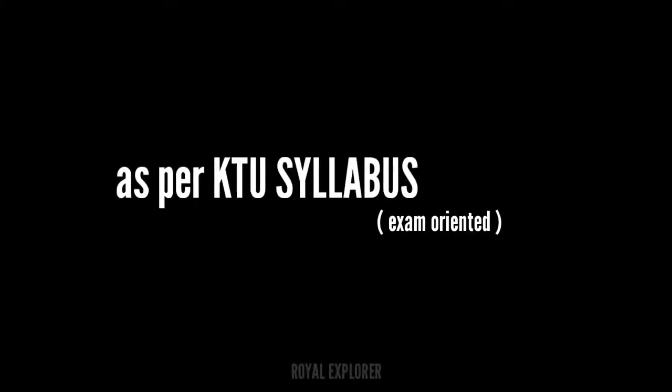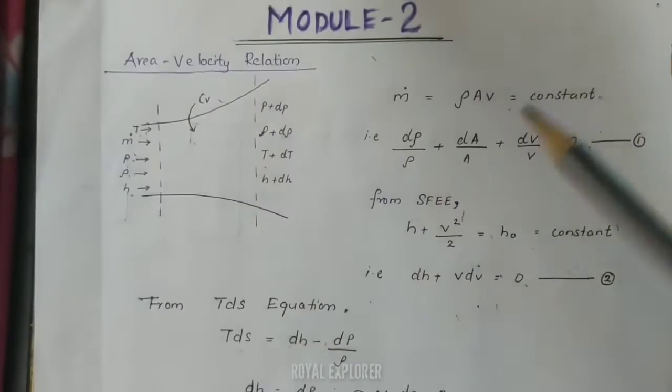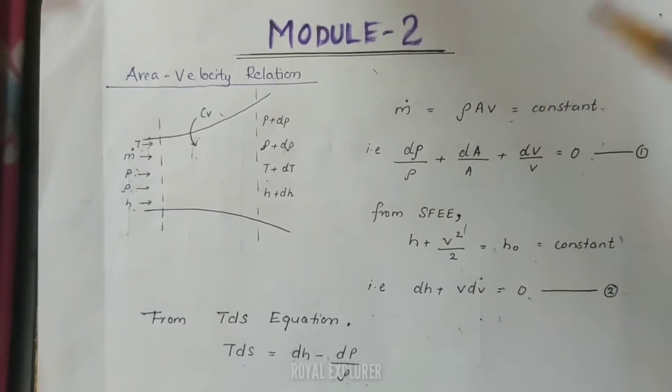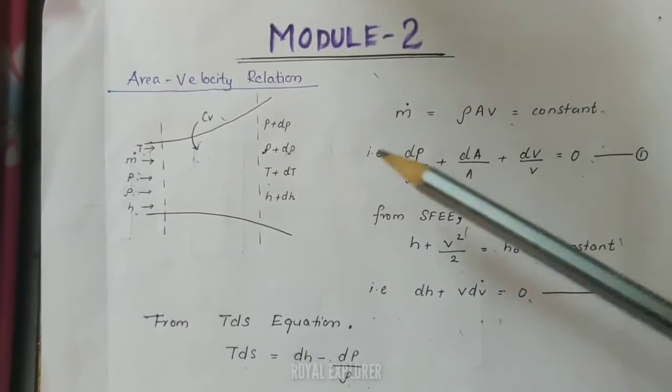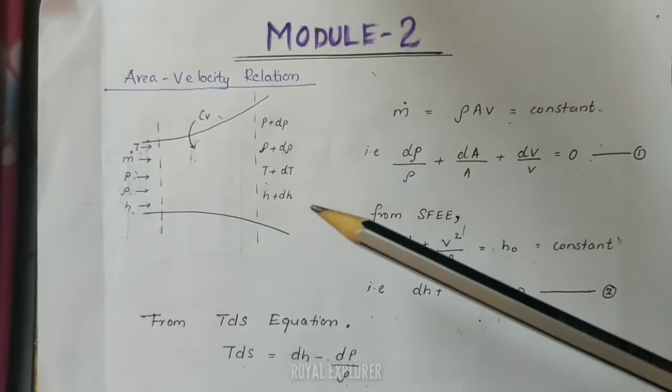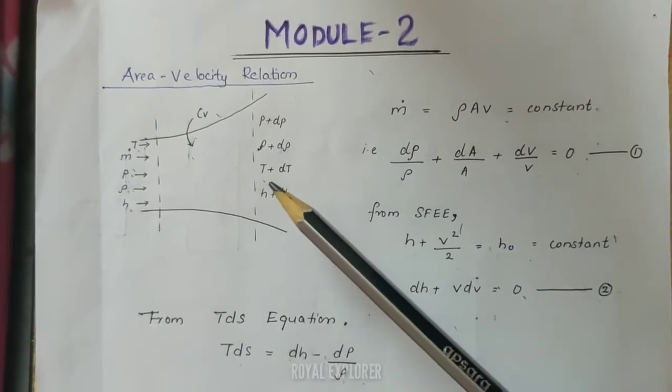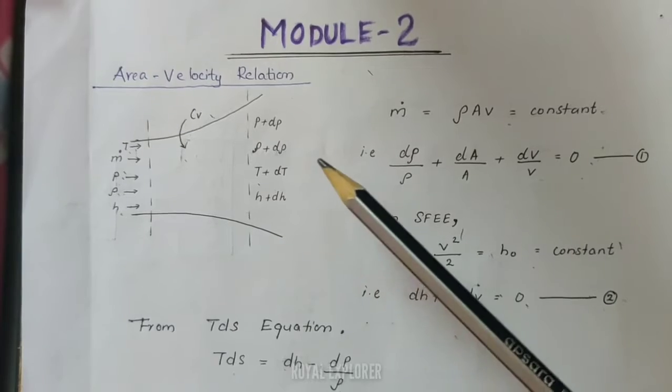Welcome to the 2nd module. We have learned about isentropic flow. In this module, we are going to talk about the area-velocity relation using one-dimensional approximation.